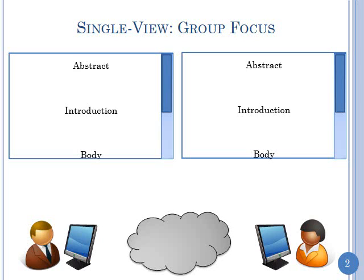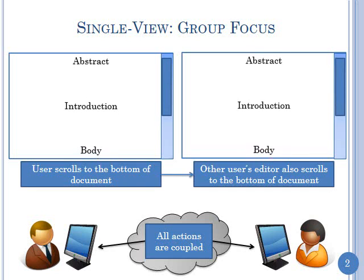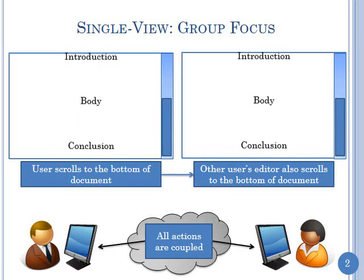One issue with collaborative applications is the coupling between users. One way to implement coupling is to couple all actions of each user, so if one user scrolls, the other person's screen also scrolls. In this kind of tight coupling you essentially have only group focus — you can't do any individual work because there is essentially one shared view among multiple people.